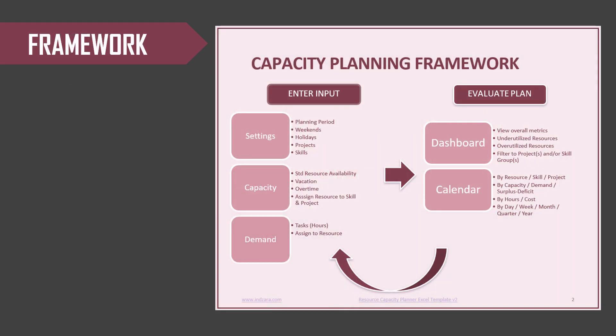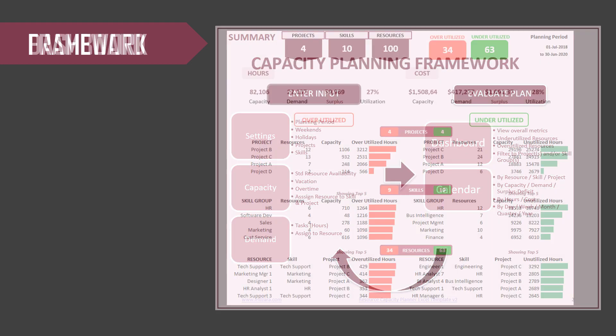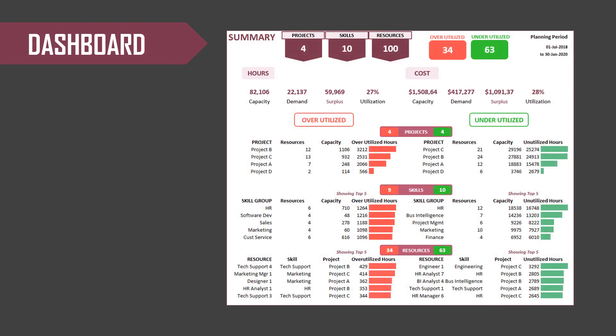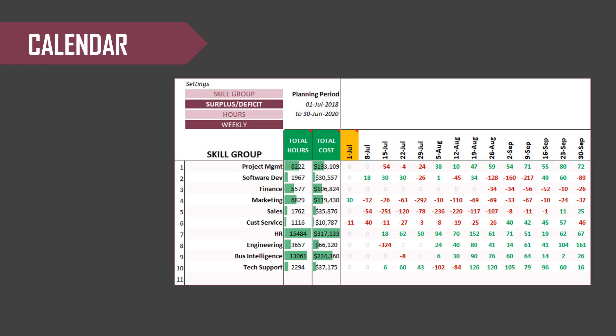Here's the framework used in this template. On the left side is the input we enter, and on the right side is the plan that the template will automatically build. This helps us identify overutilized and underutilized resources, and then we can tweak the inputs again to meet our objectives. Here's a quick snapshot of the dashboard that gets automatically created, and we also have a calendar view providing daily, weekly, monthly, quarterly, or annual views of capacity, demand, or surplus.